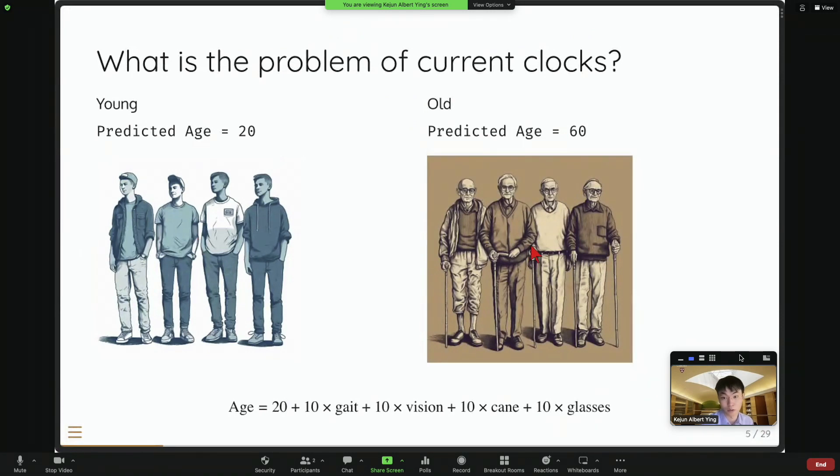So basically using this algorithm here, we can already successfully predict the age of the young people. They would predict to be 20, which is great. And old people, they predict to be 60, which is also great. And so far so good.